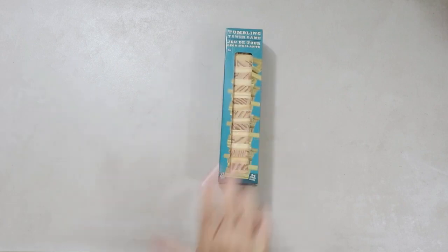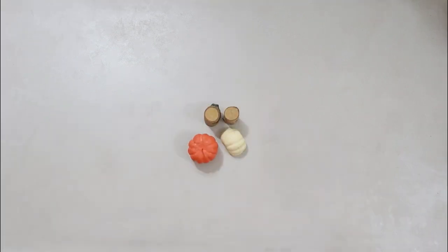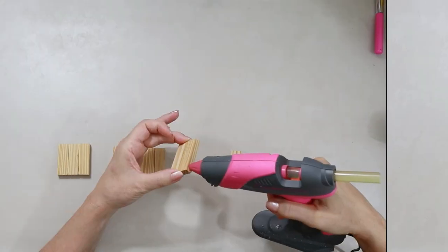For this DIY, you're going to need four bottle caps, some tumbling tower blocks, some craft sticks, and some decorative picks and wood of your choice.